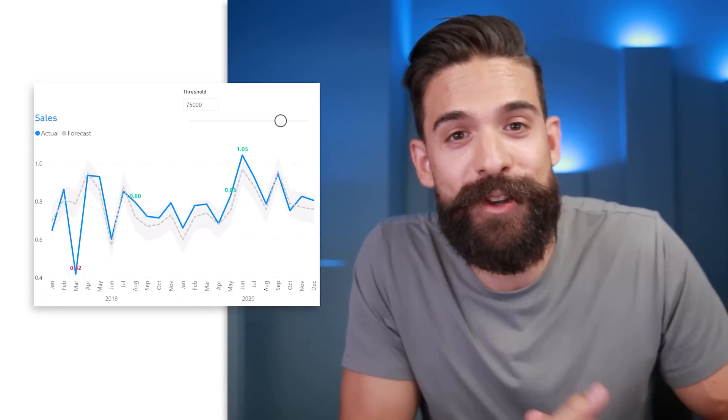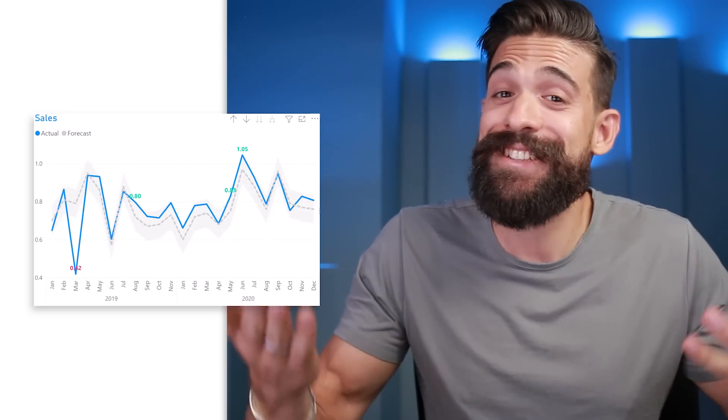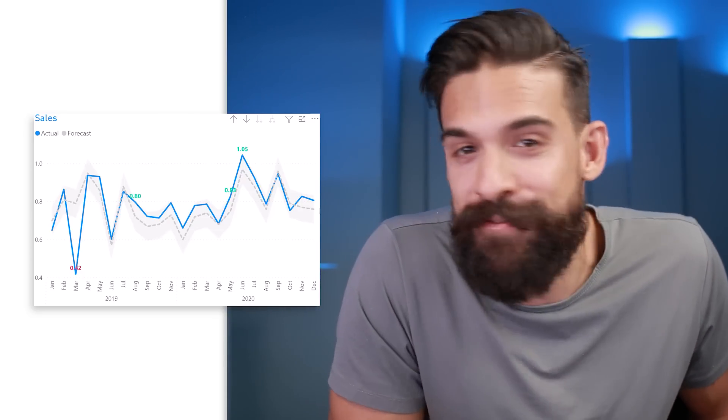Now we have the chart we were looking for with dynamic labels. Changing the threshold to zero shows all labels; setting it to 100,000 shows only the most extreme one; 75,000–80,000 shows just a few, so you know exactly where to focus. This is how you get the most out of the updated conditional formatting feature for data labels. Let me know what you think in the comments, and I hope to see you in the next video.